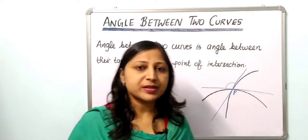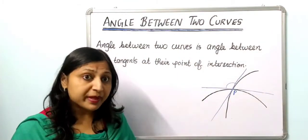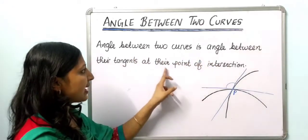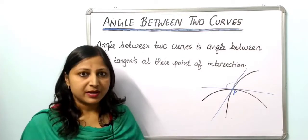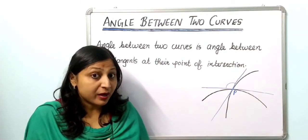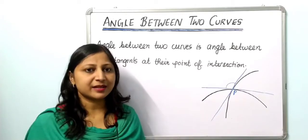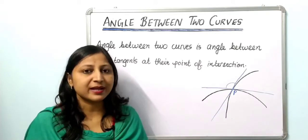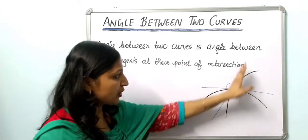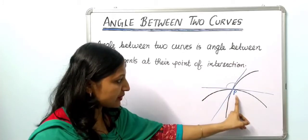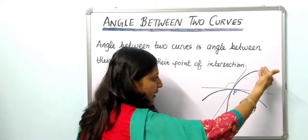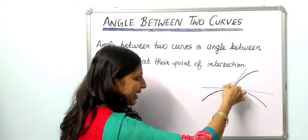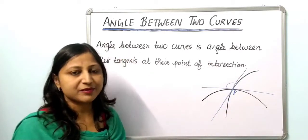Before moving to questions, we should know what we mean by angle between two curves. The angle between two curves is the angle between their tangents at their point of intersection. So when two curves intersect at a point P, the tangent of the first curve and the tangent of the second curve meet at that point, and the angle between those two tangents is called the angle between the two curves.